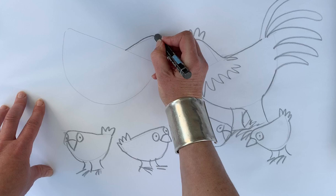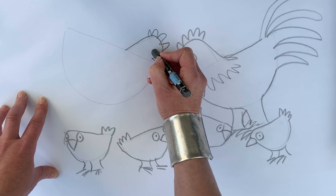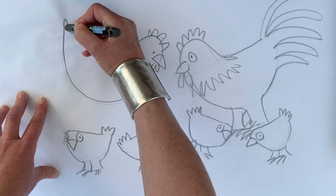And then this is the hen. Now she's got the same comb on her head. But she'll only have smaller bits here and she won't have such a fancy tail.